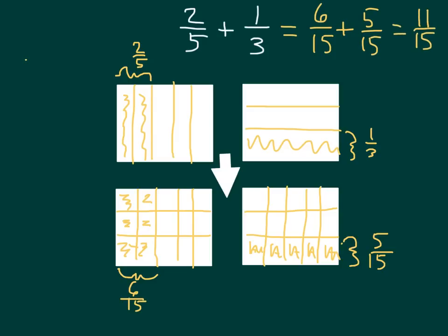And this makes sense — we count 11 parts, which is 11 fifteenths there. Our whole equation, again, is 2 fifths plus 1 third equaling 11 fifteenths. We got like units to be able to add them.